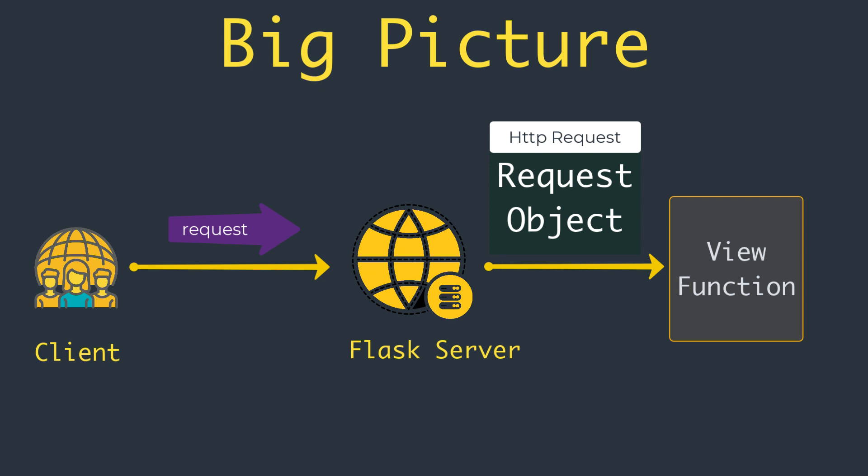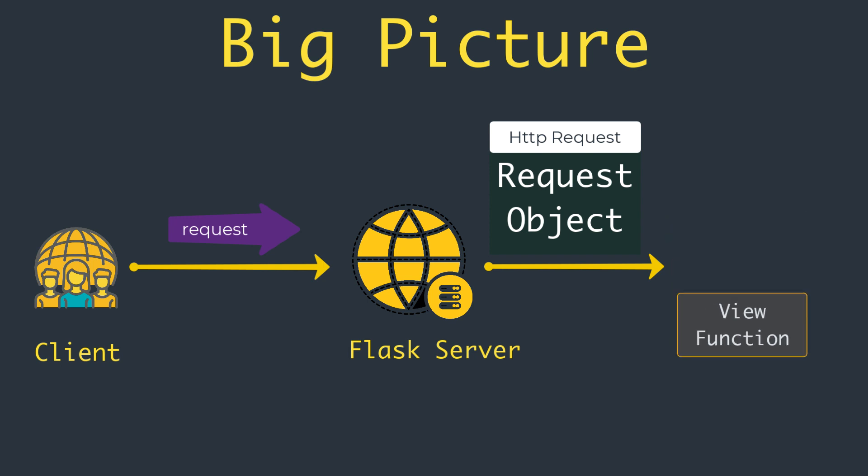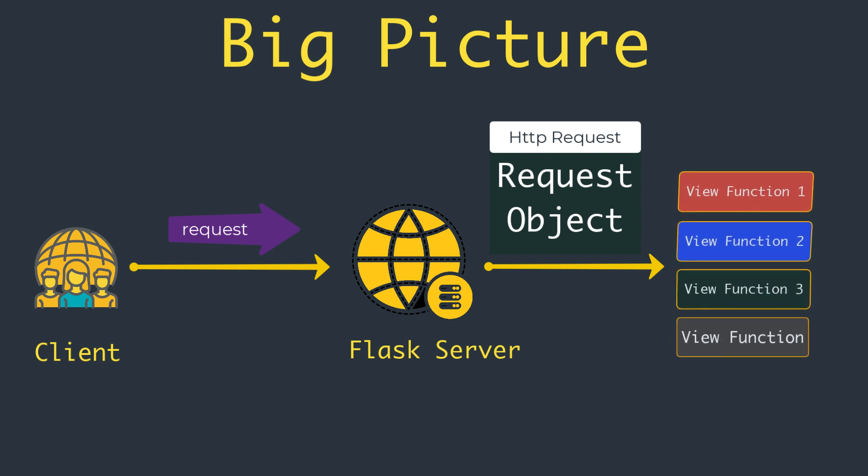The obvious way Flask could give a view function access to the request object is by sending it as an argument, but that would require every single view function in the application to have an extra argument. Things get more complicated if you consider that the request object is not the only object that view functions might need to access to fulfill a request.